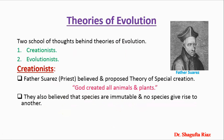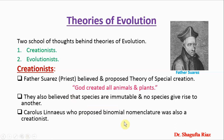Creationists believed that living things came into existence in their present forms, specifically created by nature, and no change has occurred since then. Each species is fixed and immutable, meaning mutation cannot occur, and each species propagates its own kind through generations by reproduction — never changing into a different species. Carolus Linnaeus, who proposed binomial nomenclature, was also a believer of the creationist group.